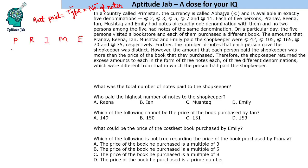The amounts paid by these five people to the shopkeeper are 42, 105, 165, 70, and 75. We will try to find out what types of notes they can have. The person who paid 42 can have denomination 2, 3, or 7. The person who paid 105 can have denomination 3, 5, or 7.